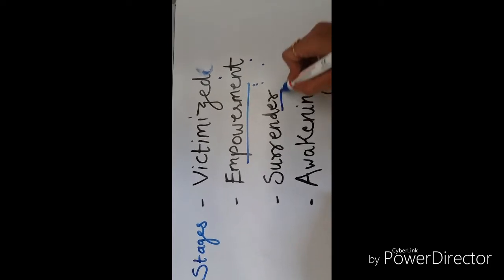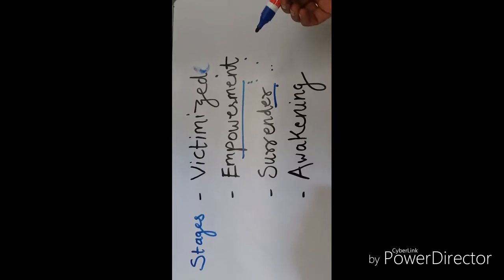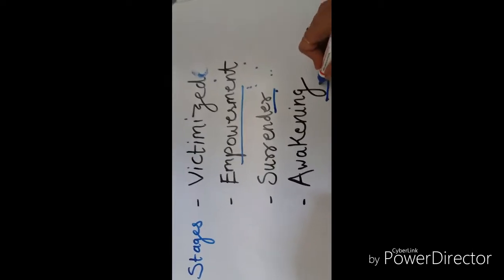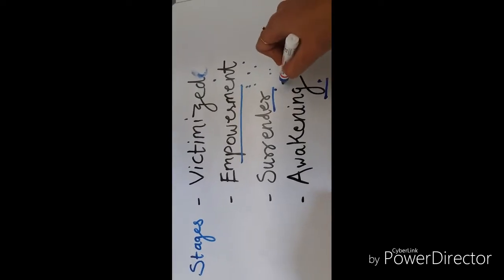And third is the stage of surrender, when you think that this is out of my hand, then you surrender things to the Almighty God or superior energy. And the fourth stage is awakening. I won't talk about this, but I am going to deal with empowerment and the surrender stage.